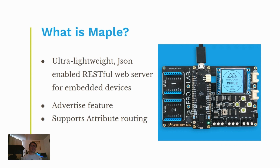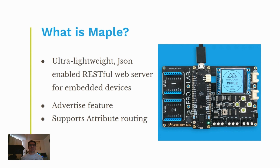MAPLE also has an advertise feature. If your project does not have a display and there's no way for you to see the IP address, and maybe you don't have a static IP address configured in your router, the advertise feature sends a UDP broadcast message across your network giving the name of the MAPLE server that is running along with its IP address. Other devices with a UDP listener will detect this MAPLE server and get its address to start sending requests to it.